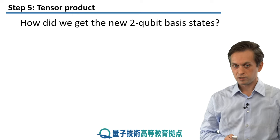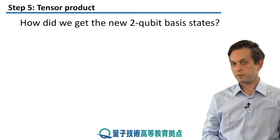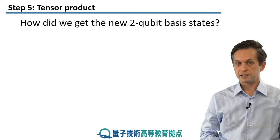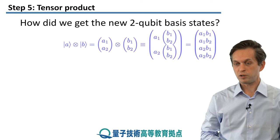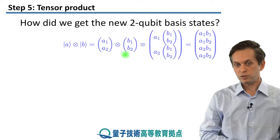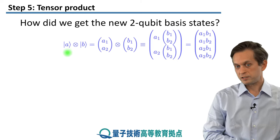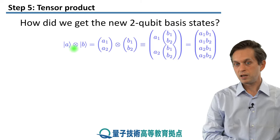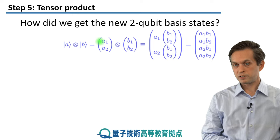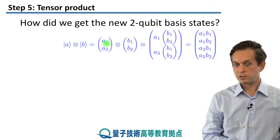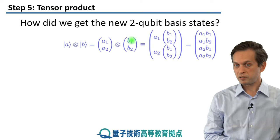The very important mathematical concept behind being able to write the basis states like that is the tensor product. How did we actually get these two-qubit basis states? We took some state of the first qubit — let's call it A — and took the tensor product with another qubit state B, where each qubit has a column vector given by its probability amplitudes.